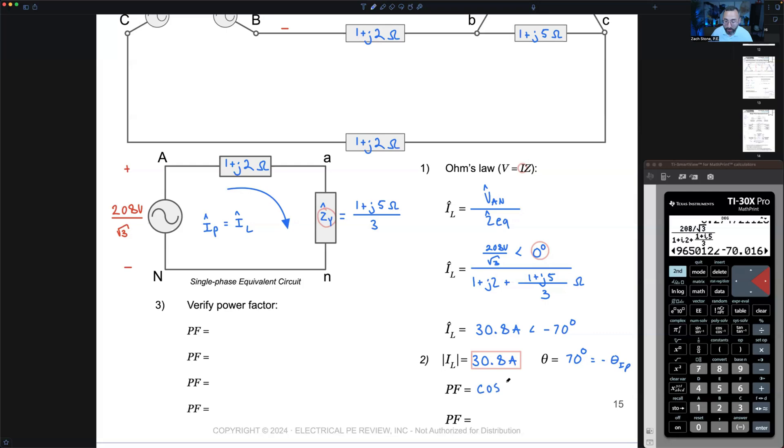So power factor, I'm just taking the cosine of 70 degrees. I'm going to be as exact as possible. I'm going to go into my complex menu and tell my calculator give me the polar angle of the current. Polar angle of the current is negative 70. Multiply that by negative one so I can calculate theta. Theta is 70. Now I can take the cosine of theta. Power factor is 0.34, really bad again.